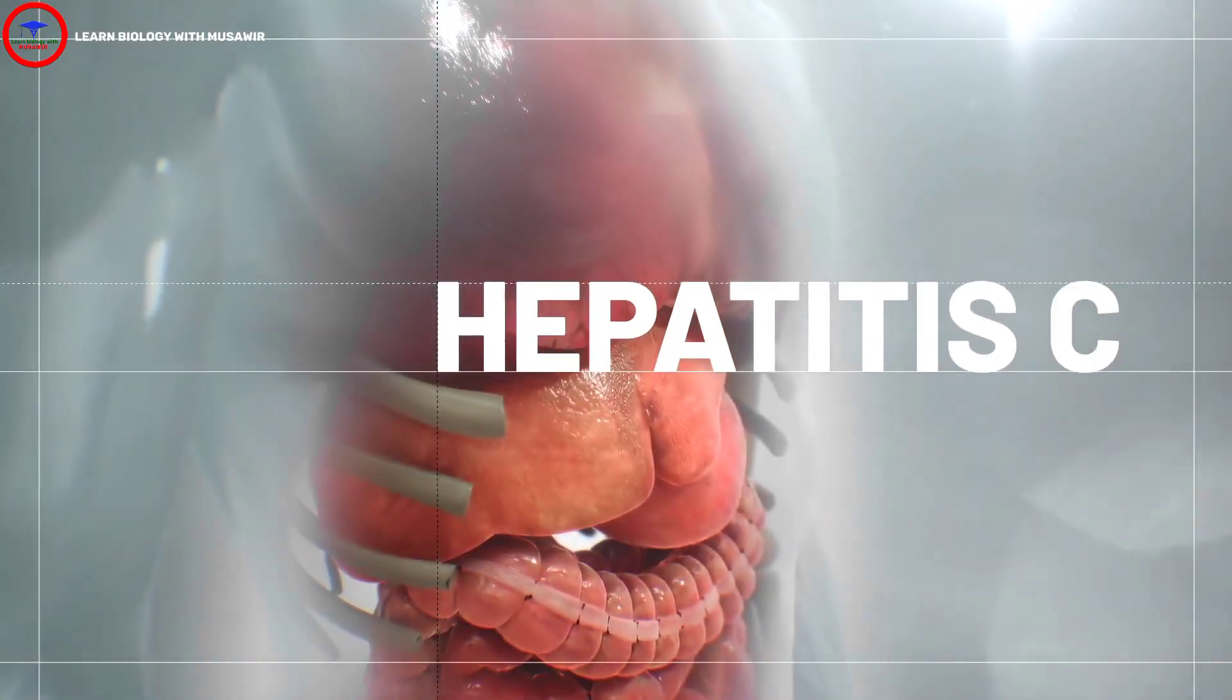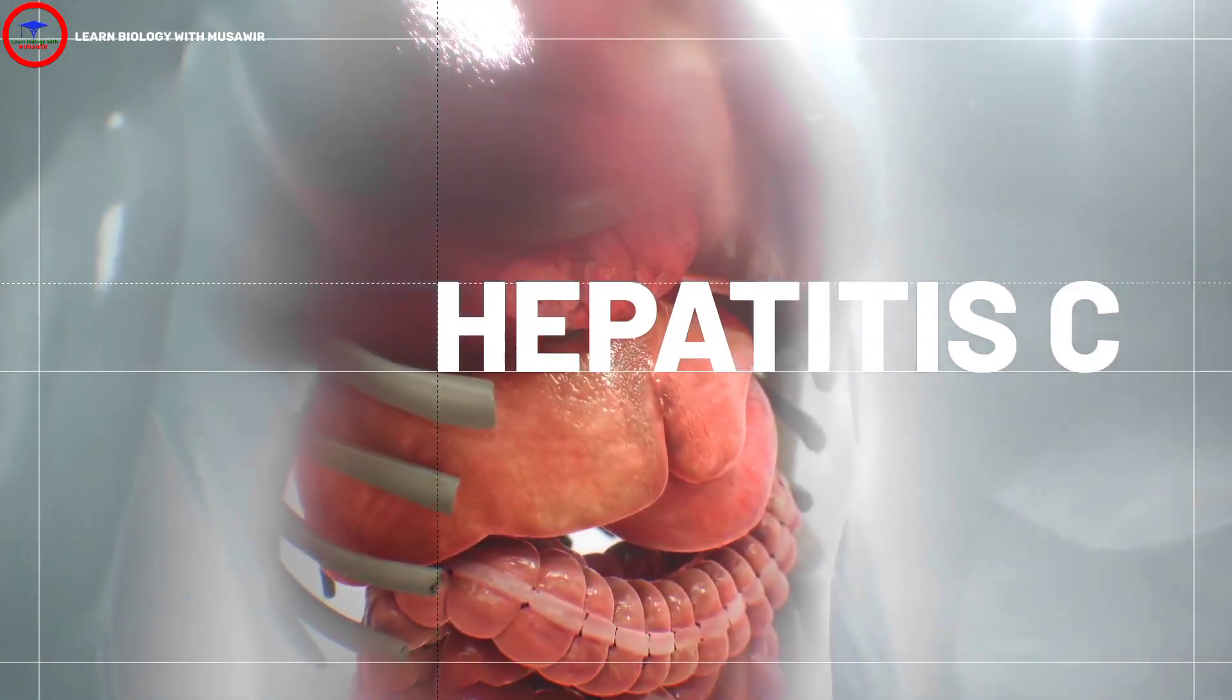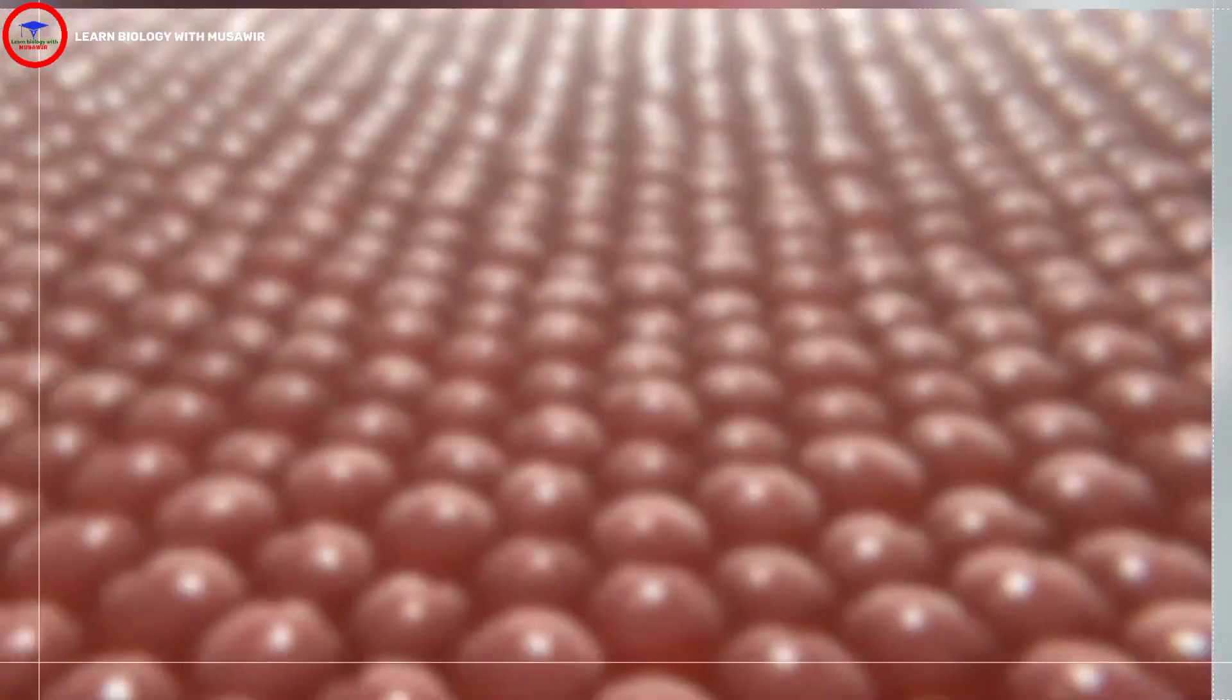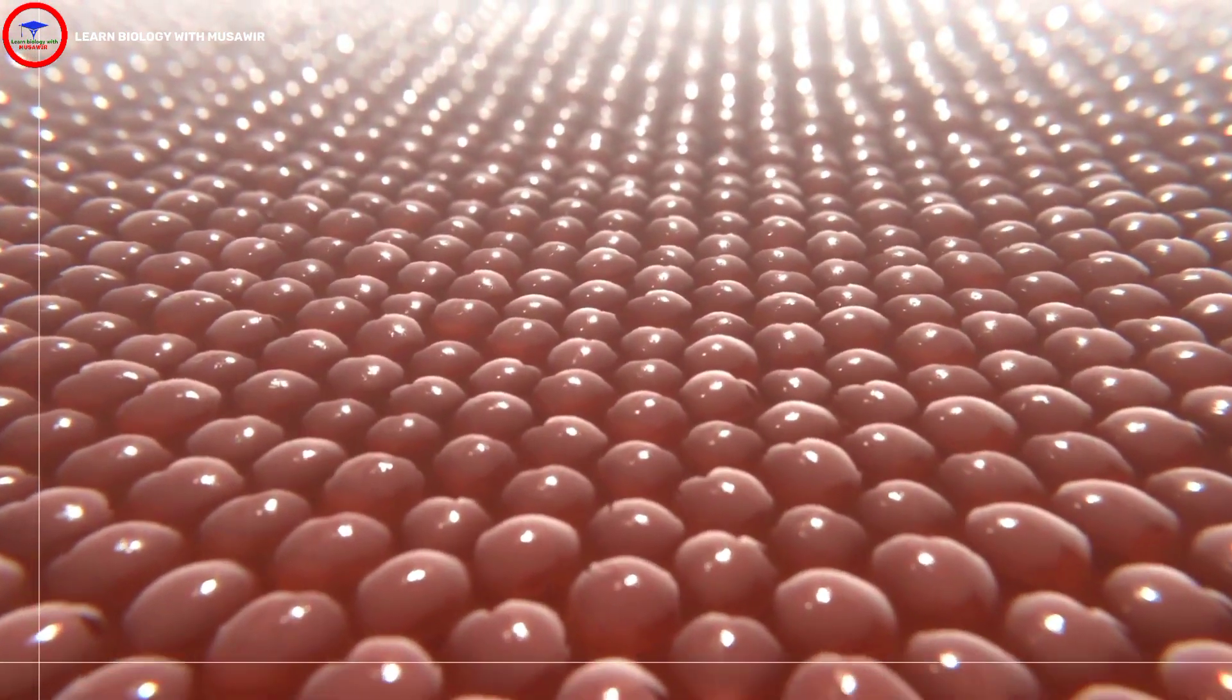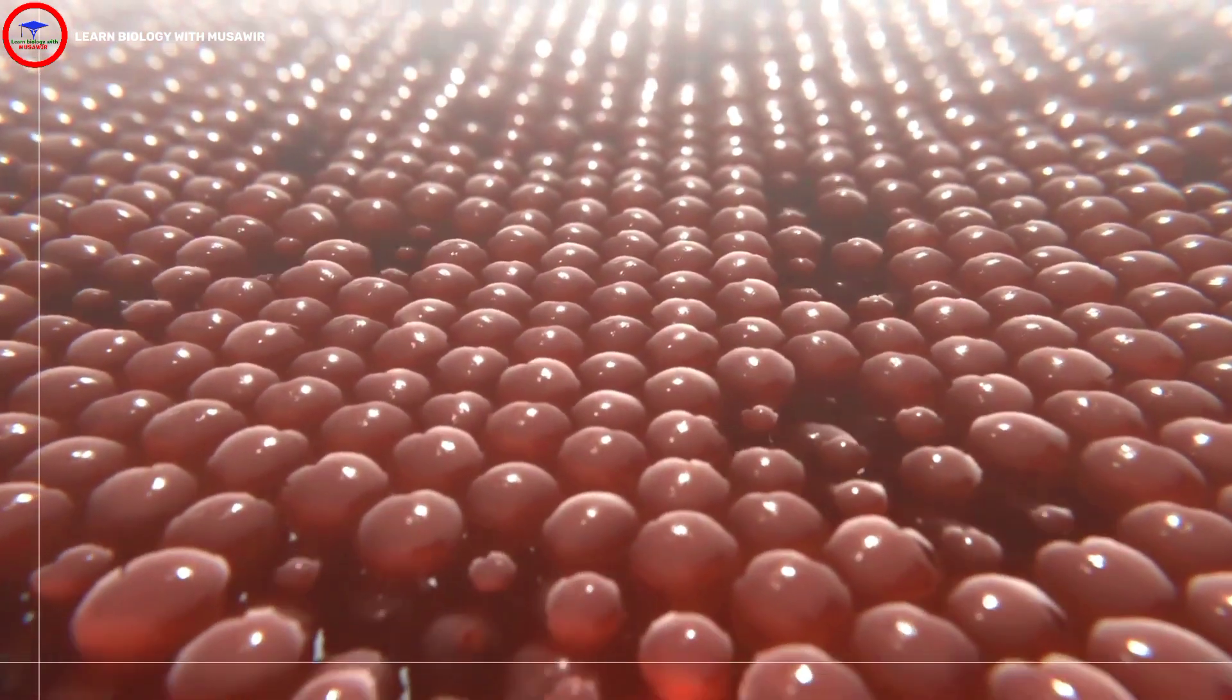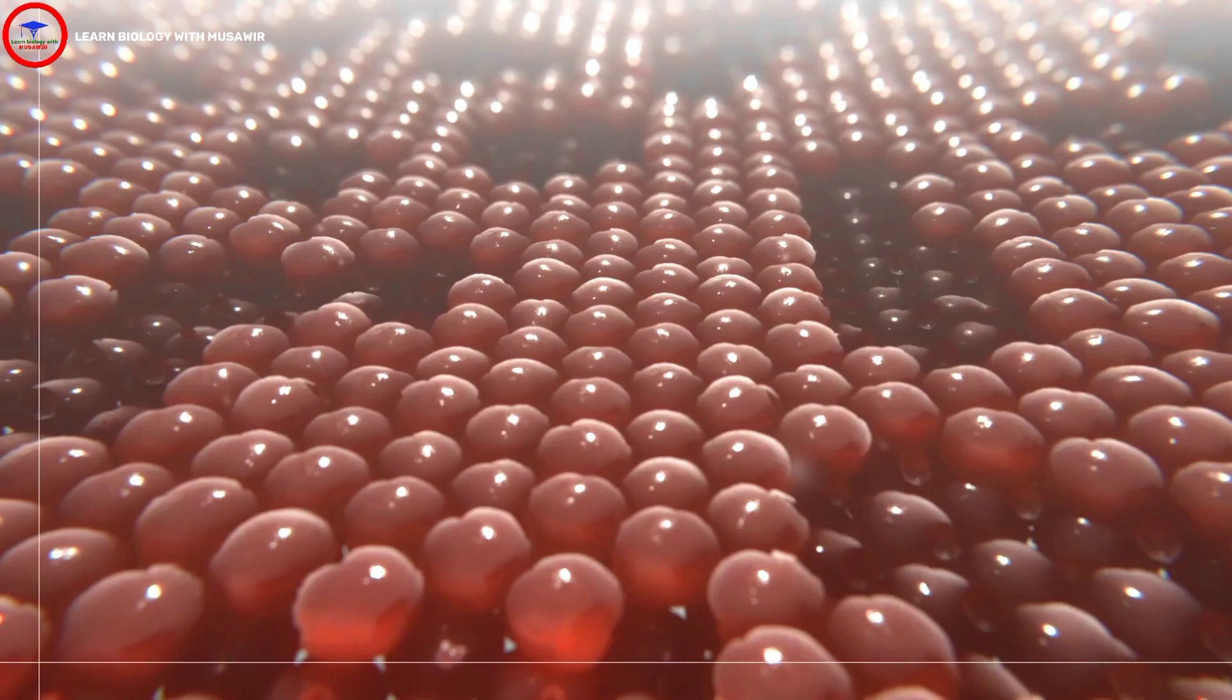Hepatitis C is a contagious liver disease caused by the hepatitis C virus or HCV. In some cases, the virus causes a long-lasting infection. When that happens, inflammation from the infection slowly damages your liver over time.